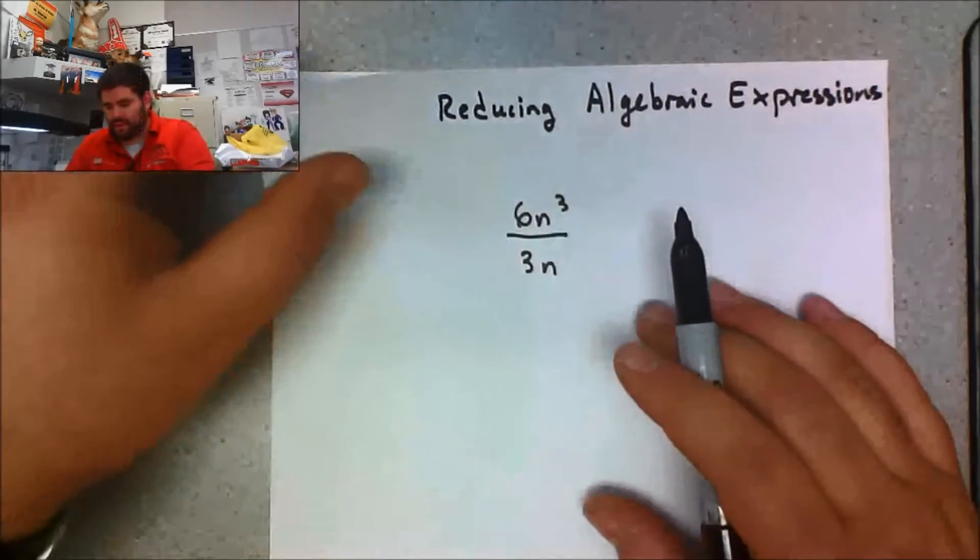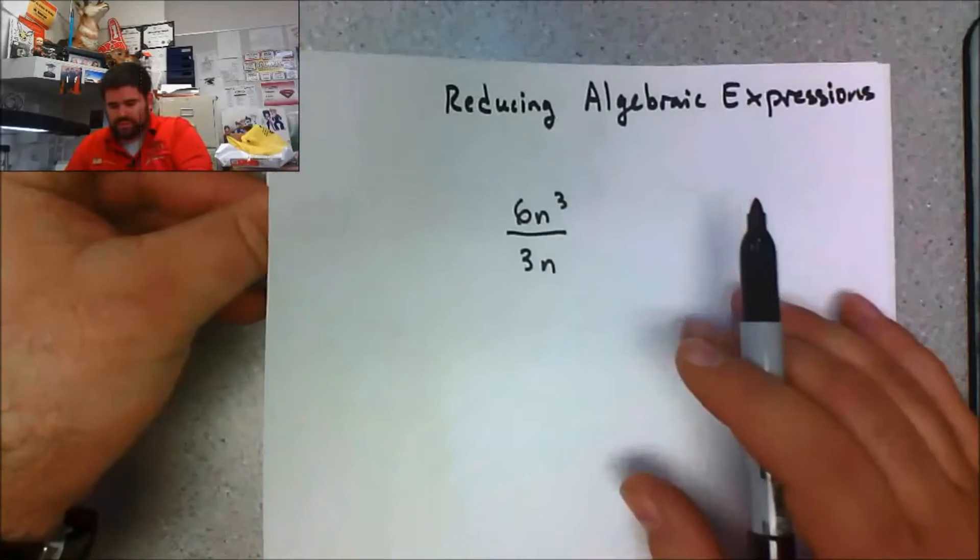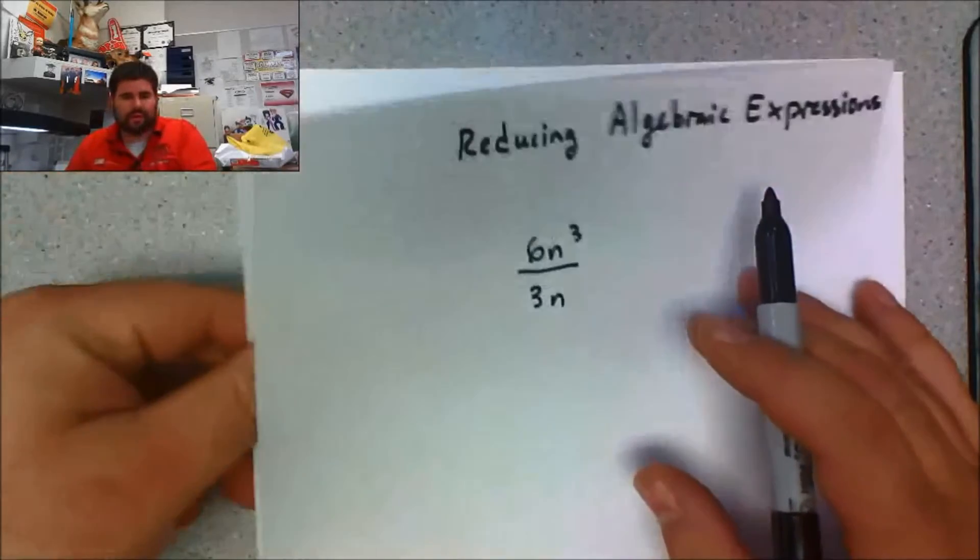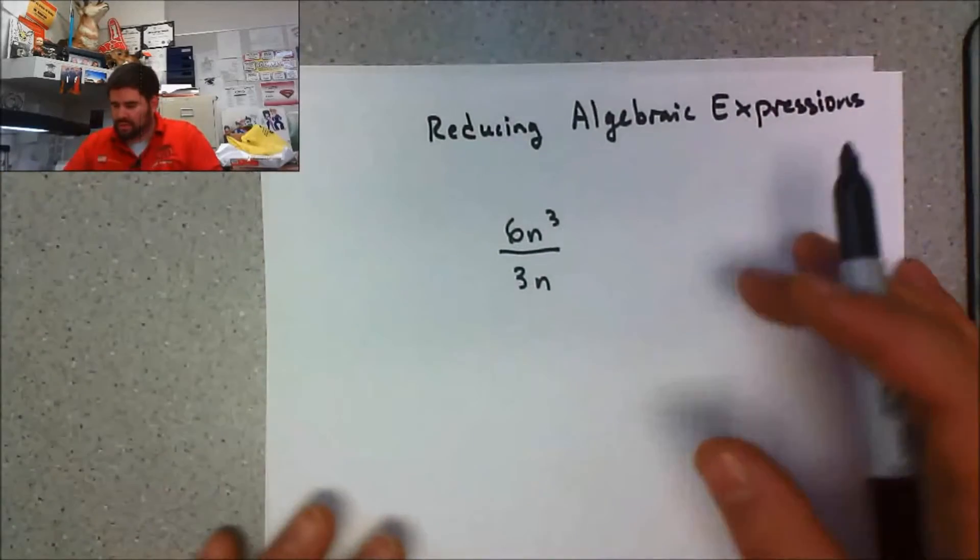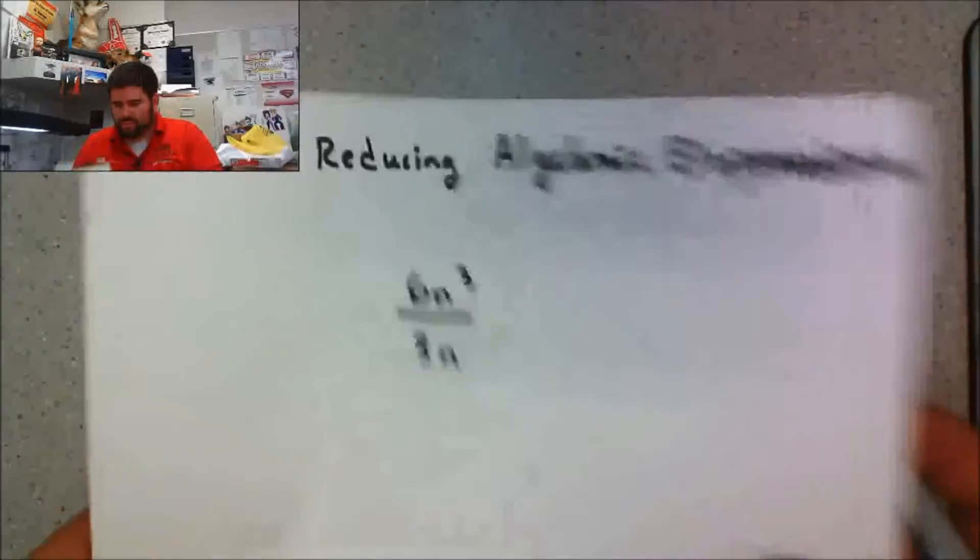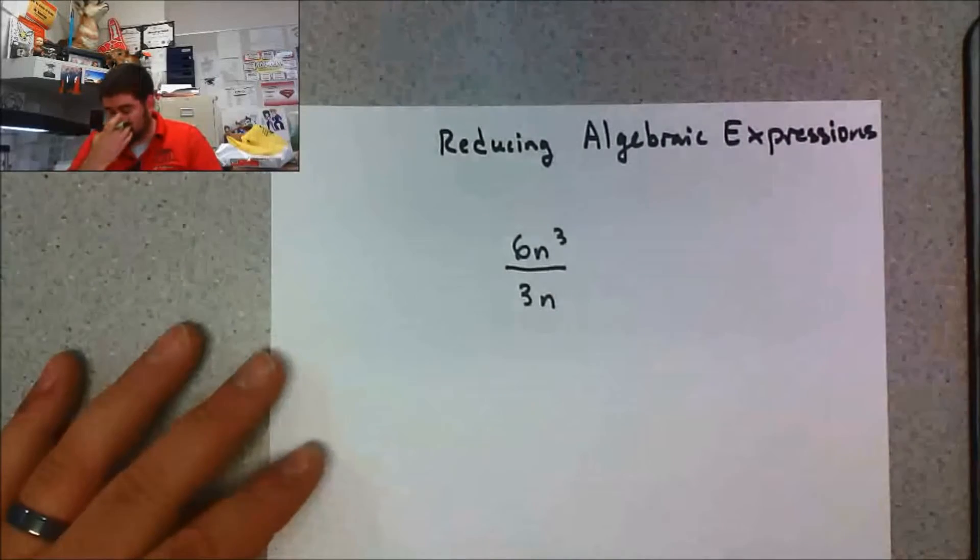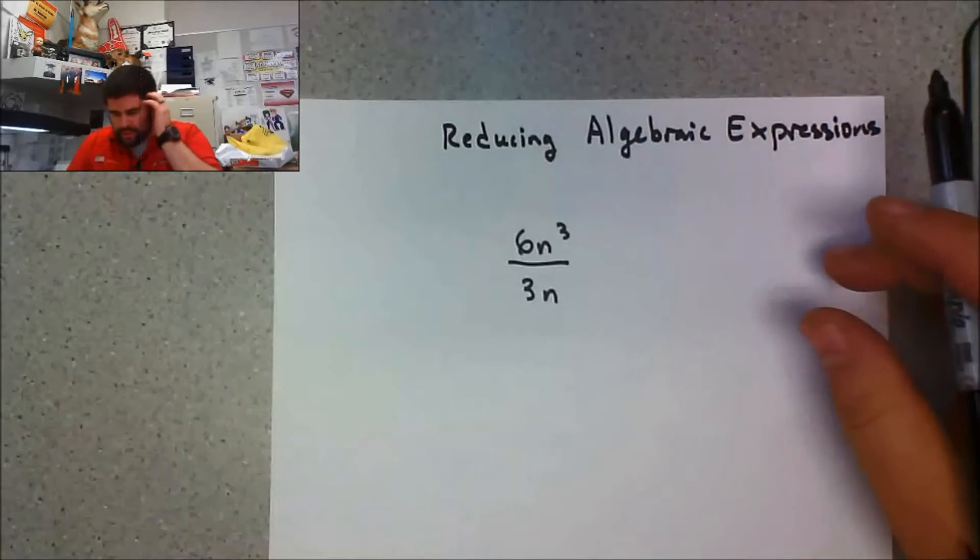We're going to start out with some basic expressions and do a couple examples. I'd like to talk about how you would start off with reducing something if you see it on your paper.